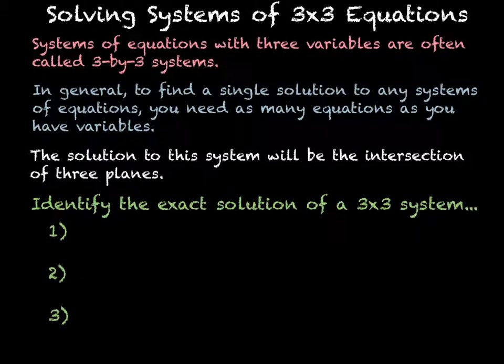Solving systems of 3x3 equations. Systems of equations with three variables are often called 3x3 systems. In general, to find a single solution to any system of equations, you need as many equations as you have variables. The solution to this system will be the intersection of three different planes, each plane being one of the equations.